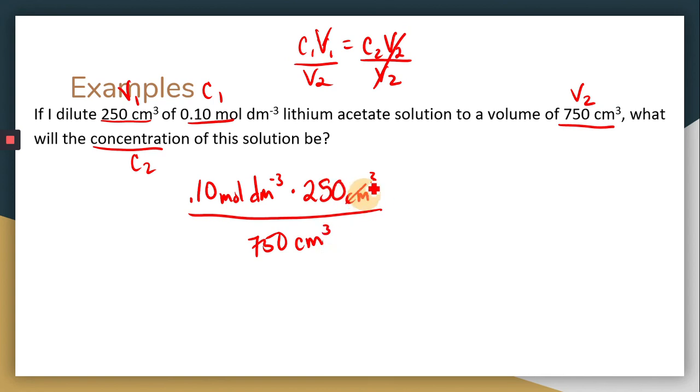Again, the volume unit didn't matter because we're simply canceling those out. We would want two significant figures because all of those numbers have two significant figures. Remember 0.0, that 0 is not significant. So you still have to go to two places. And that is our new concentration. And concentration has the units of moles per decimeter cubed.